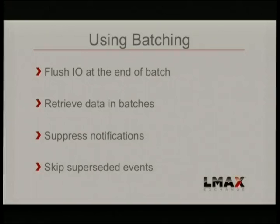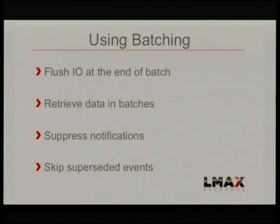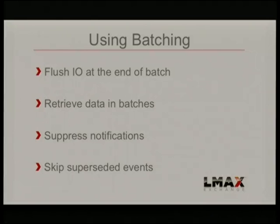That batching is exposed up to your handlers and lets you do some clever things to take shortcuts when you're falling behind. One of the consumers we have off our ring buffer typically is a journaler. Every event that comes into the system, we write to disk because our entire memory model is in RAM, and if you pull the plug, it's gone. By writing everything to a journal, we know that we've got a record and can replay it to get our state back. Obviously writing to disk is pretty slow — we've got ridiculously fast disks and are doing everything we can — but it's still slower than a completely in-memory order matching cycle, and it's the problem point of our system. So we use this batching to allow it to keep up.